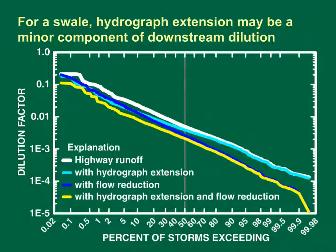For a swale, hydrograph extension may be a minor component of downstream dilution. This graph shows the potential effectiveness of a grassy swale for modifying downstream storm flows. The vertical axis is the dilution factor on a logarithmic scale ranging over five orders of magnitude — the proportion of downstream flow comprised of highway runoff. A dilution factor of 1 occurs when there is no upstream flow; a small dilution factor indicates highway runoff is a small proportion of downstream flows. The horizontal axis is a probability scale for the percentage of storms with dilution factors that equal or exceed a given value. The white line shows dilution factors without BMP treatment; the light blue line represents stochastic hydrograph extension from a swale ranging from 6 minutes to 3 hours; the dark blue line represents stochastic flow reduction; and the yellow line shows dilution factors when both extension and reductions are modeled.